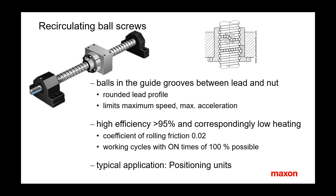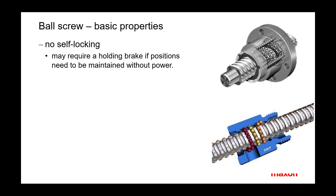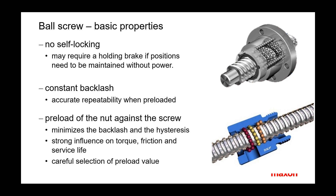Ball screws have many properties in common with ball bearings, and many concepts such as life calculations and behavior upon preloading apply as well. The rolling friction is low and results in high efficiency. Ball screws are mainly used in applications that need dynamic motion with short and repeating operating cycles. Ball screws are not self-locking, the friction being too low or the efficiency too high. Very often the nuts are preloaded to eliminate backlash, and a high repeatability in positioning can be achieved.